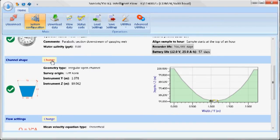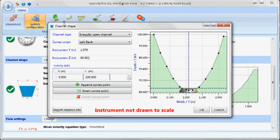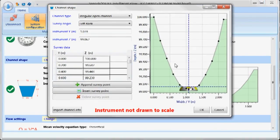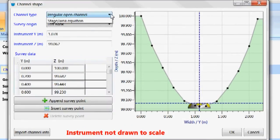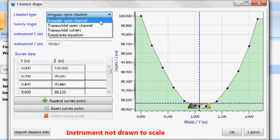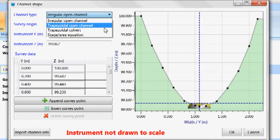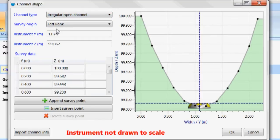The next thing that we do is we want to program in the channel shape. In this case, we've already programmed in the channel shape because this is the parabolic channel that we were using this morning. But I'll just click on change to show you what the options are. We can pick a couple different channel types: an irregular open channel, an open channel trapezoid and a trapezoidal culvert, or also a stage area equation. We set the survey origin as a left bank or the right bank. This orientation is defined as you're looking downstream. As you're looking downstream, to your left would be the left bank, to your right would be the right bank.